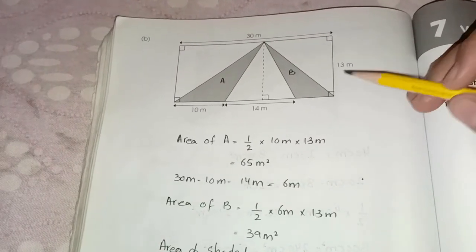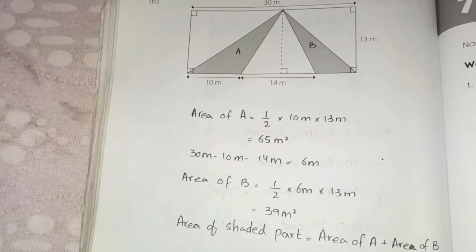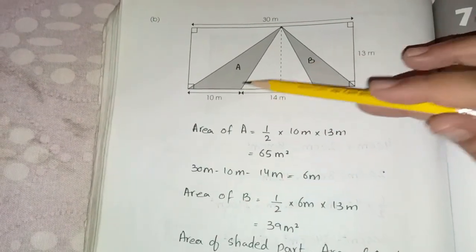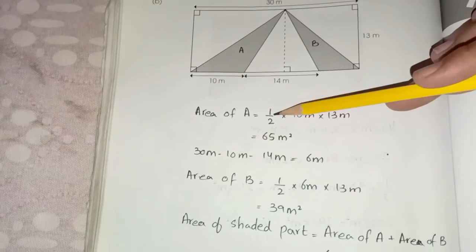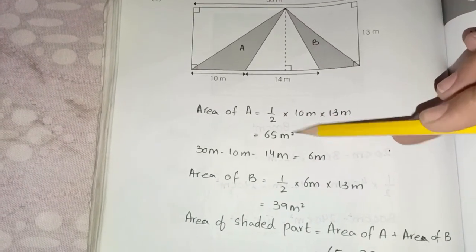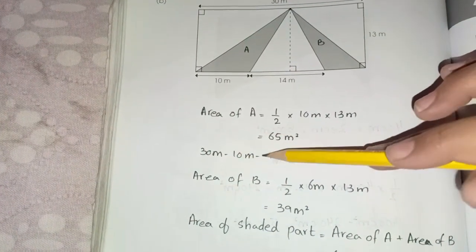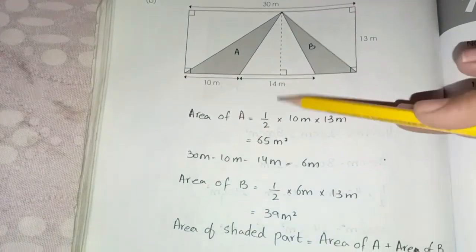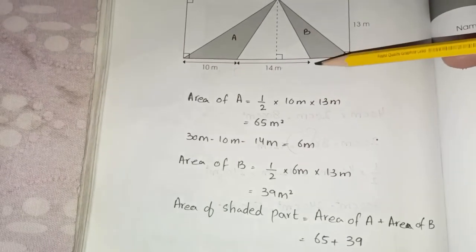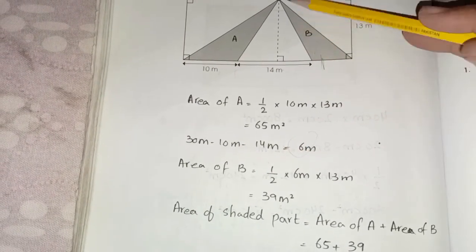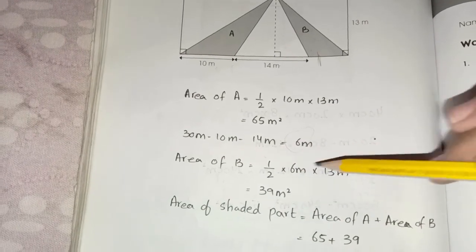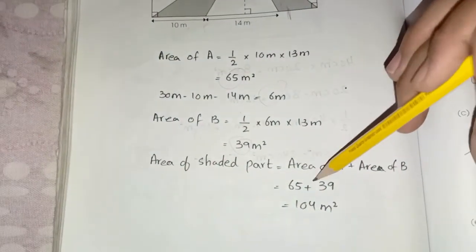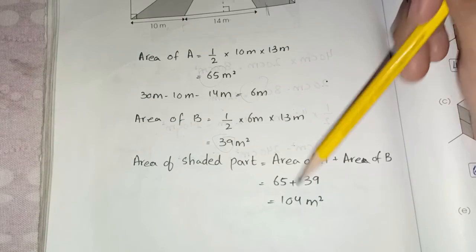Last question of the page — chapter 6, page number 136. We have shaded parts A and B, both are triangles. First we find the area of A, then subtract from the total dimensions of 30, 10, and 14. The total area gives 6. Then half multiplied by breadth and height: 6 multiplied by 13 equals 39. We add 39 and 65 to find the total shaded area, giving an answer of 104 centimeters squared.